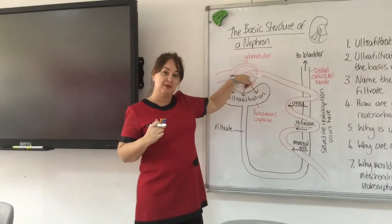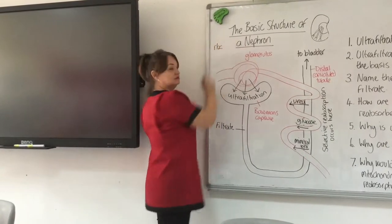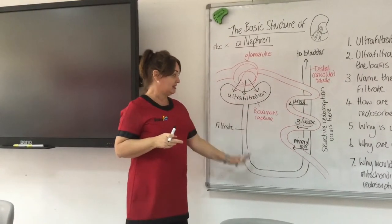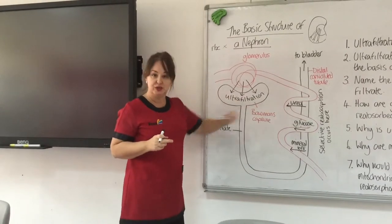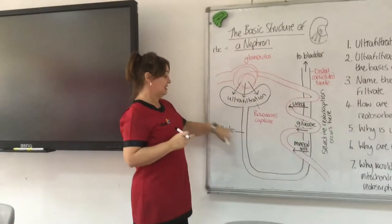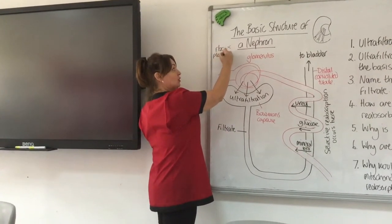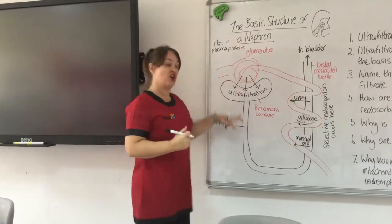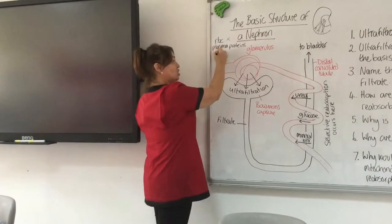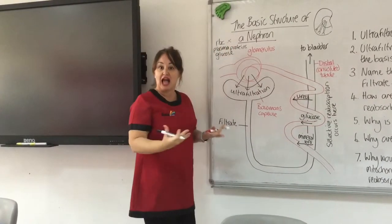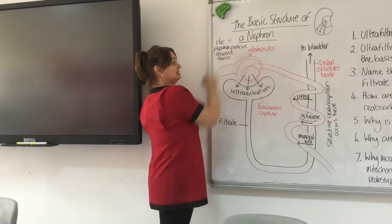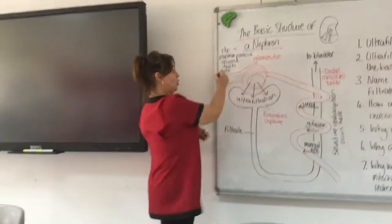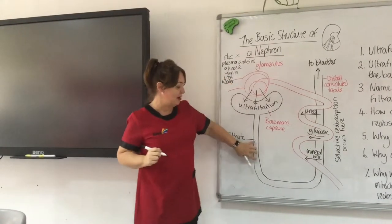Let's think about what's in blood. Red blood cells are too large — they won't pass out into the Bowman's capsule. Plasma proteins, meaning hormones and enzymes, are also too large and won't pass out by ultrafiltration. However, other things like glucose, mineral ions, salts, urea — which we obviously want to get rid of — and water will pass through and form the filtrate.